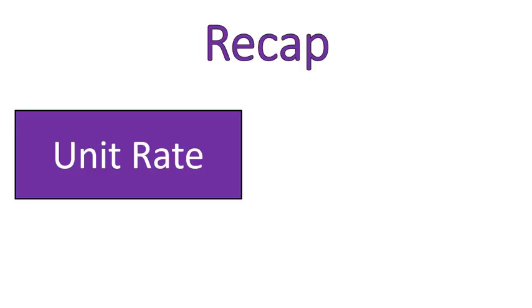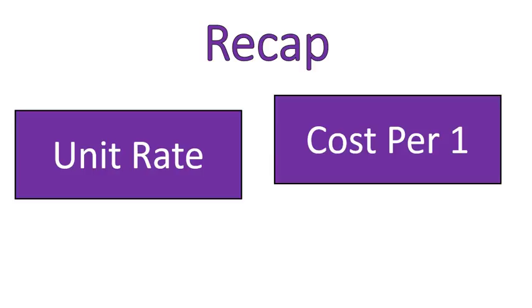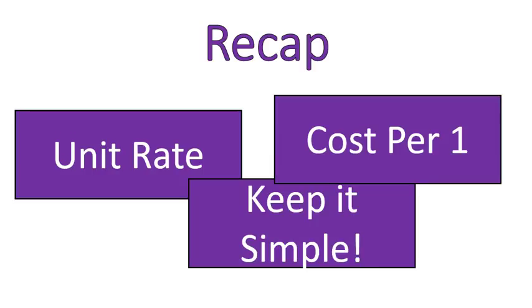Quick recap: we talked about unit rate — that is the cost per one. Try and keep it simple. Unit rates are there to help make your life simple, so don't make it too overly complicated. Basically, you're dividing to find the cost for one item. I hope that lesson was helpful for you. Have a wonderful day.